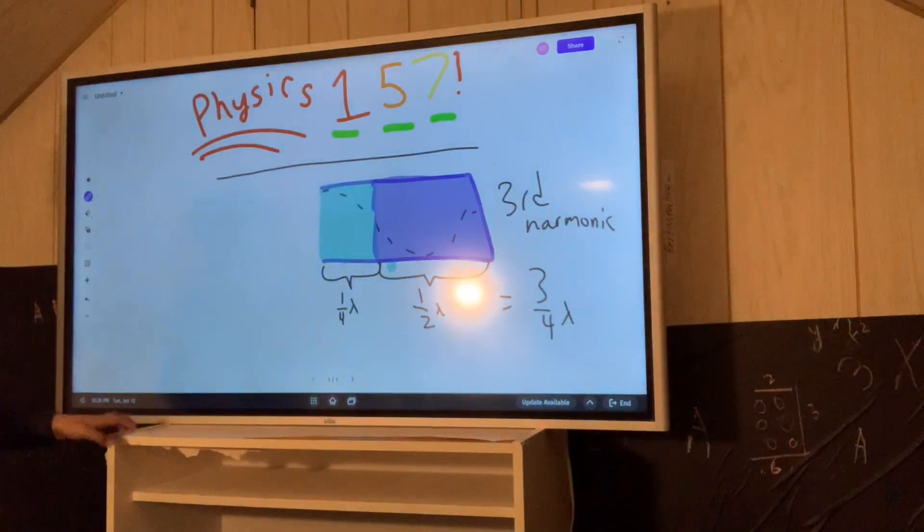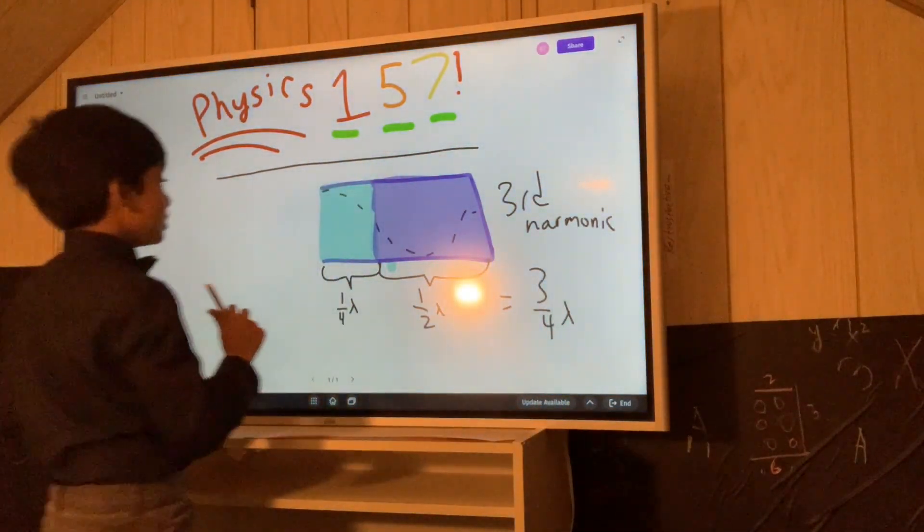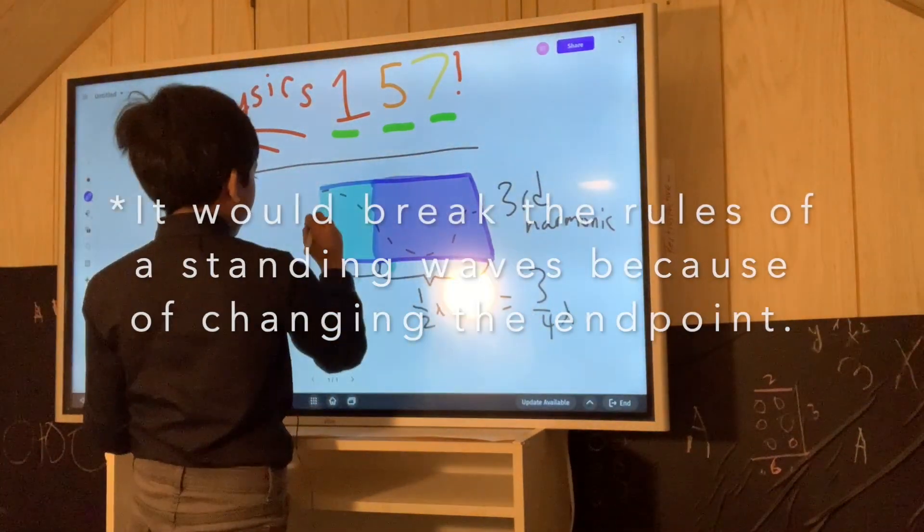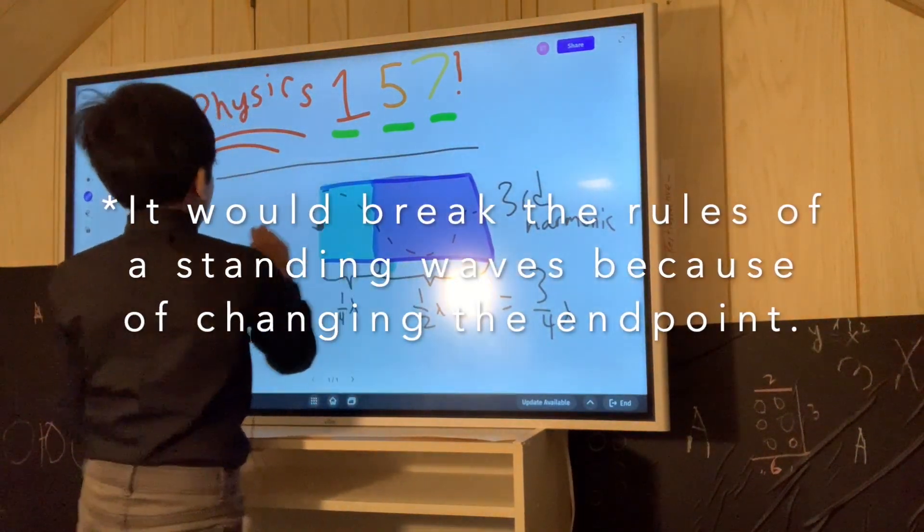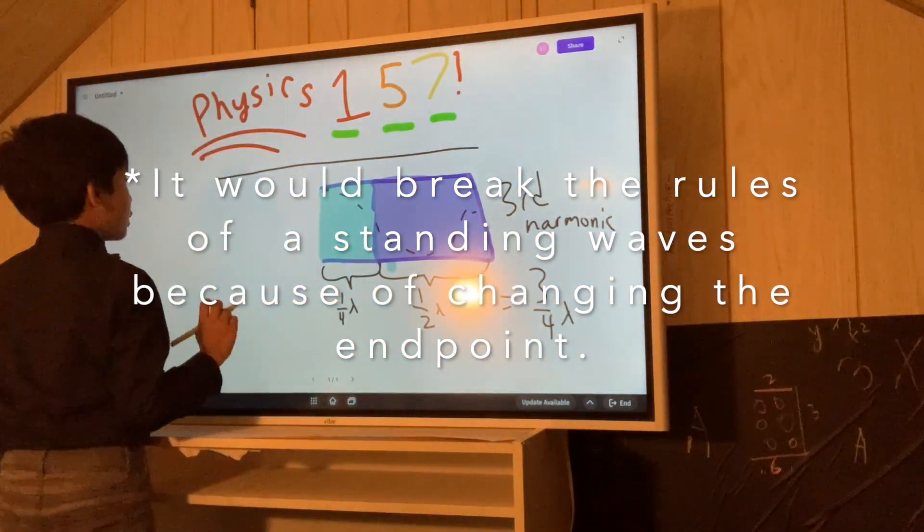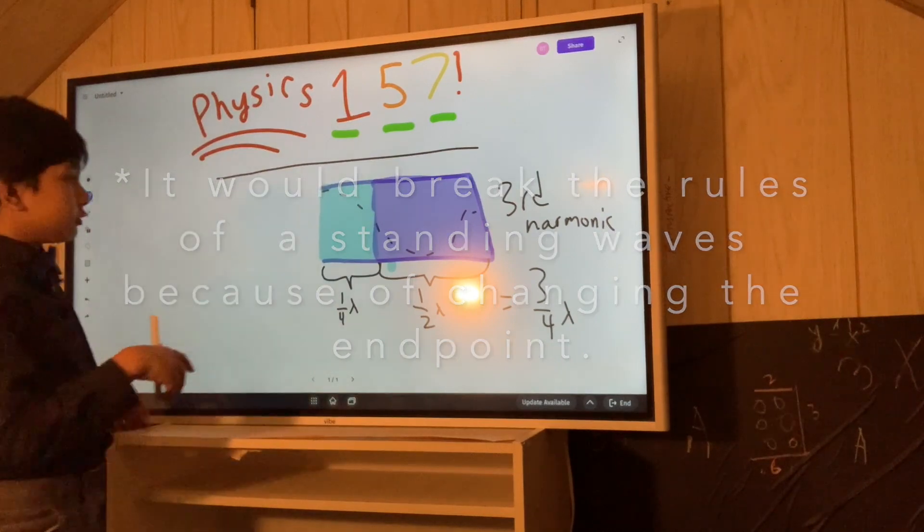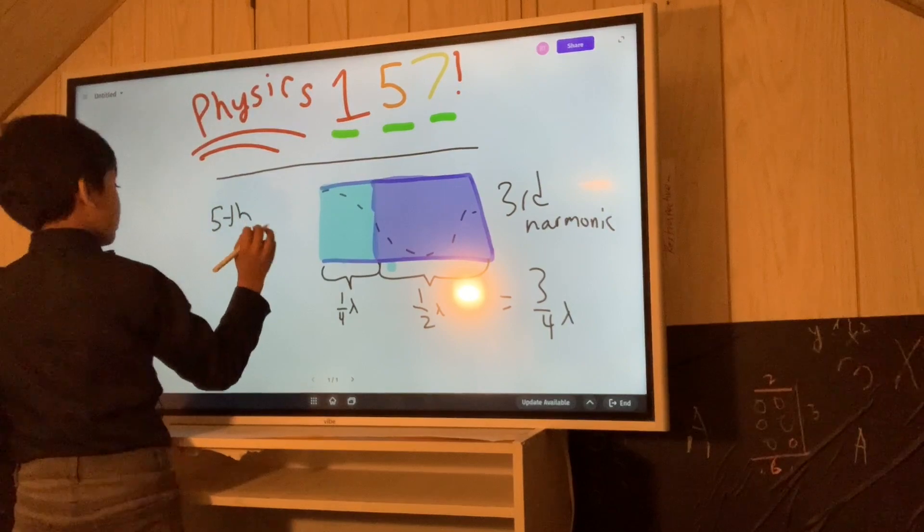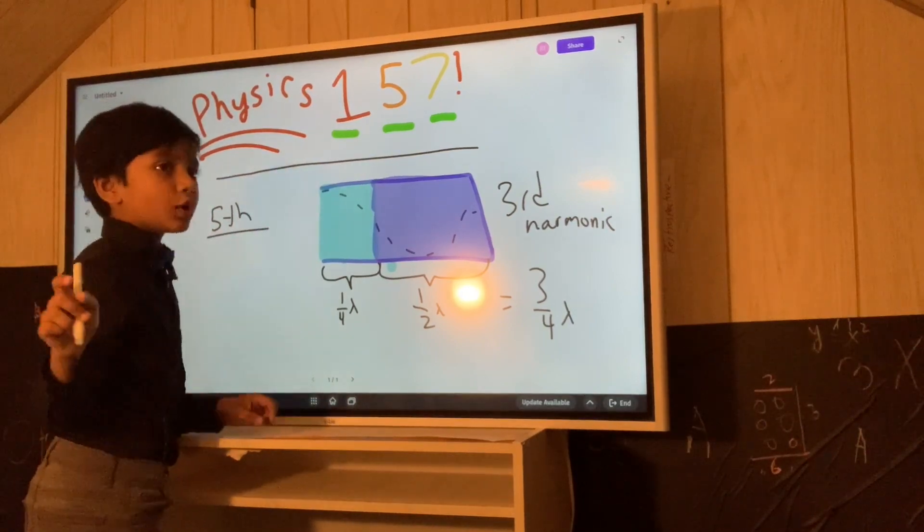So, what can we do now? Well, the fourth harmonic would require the starting point of the sound wave to be here. We don't want that. So we can't have that. No fourth harmonic. And basically, no even harmonics allowed here. So that means the next guy we have on our list is the fifth harmonic.